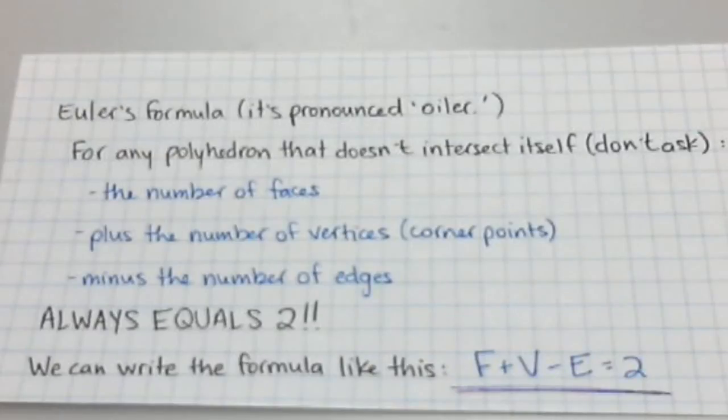What he discovered is that for any polyhedron that we study in this unit on three-dimensional geometry, you take the number of faces, add the number of vertices, and minus the number of edges, and the answer is always 2. So you write it out as a formula like this: F plus V minus E equals 2. That's faces plus vertices minus edges equals 2.